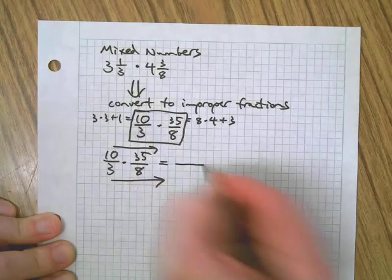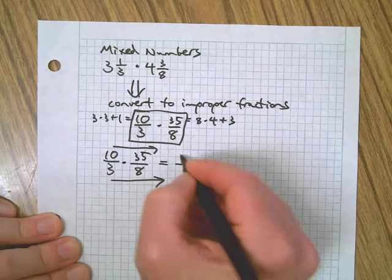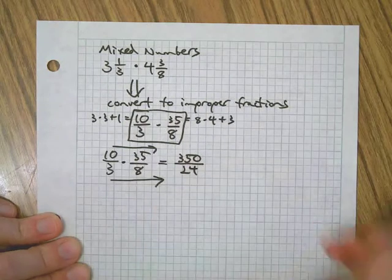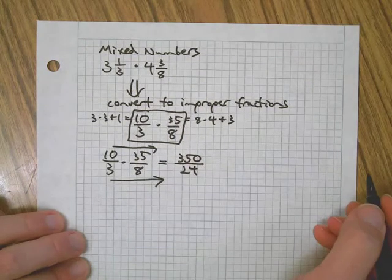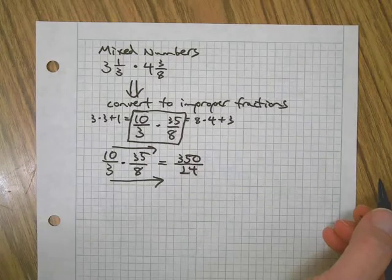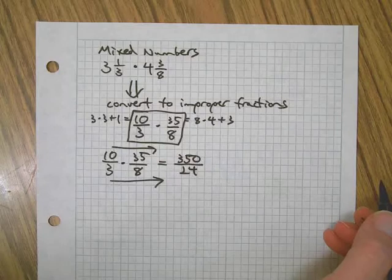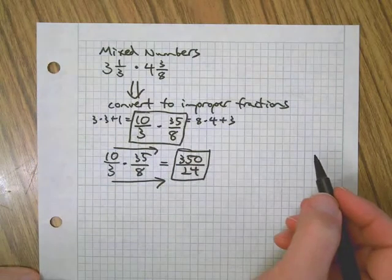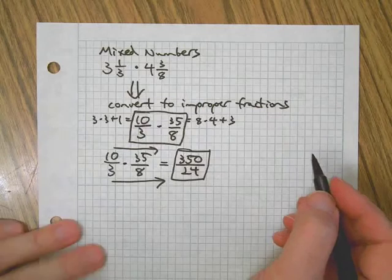Multiply straight across: 35 times 10 is 350, 8 times 3 is 24. Can we reduce this? Oh, I don't know. Life's too short. We're gonna stick with that. We could...